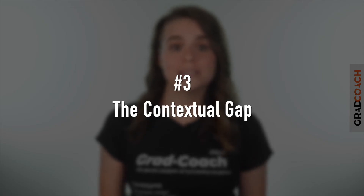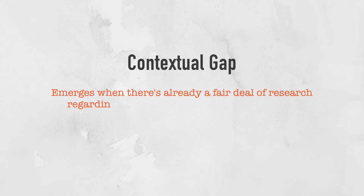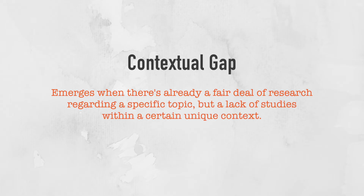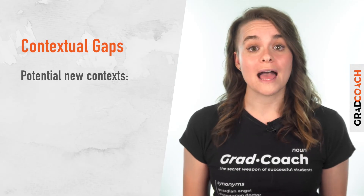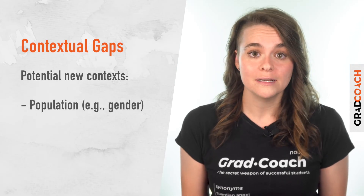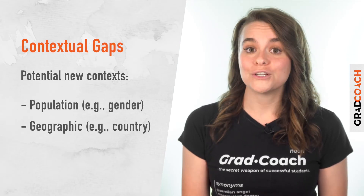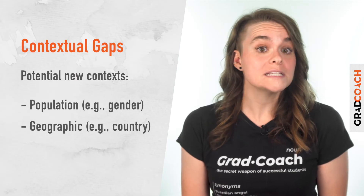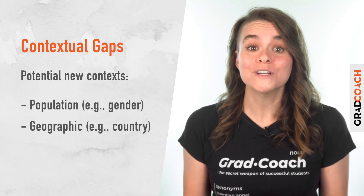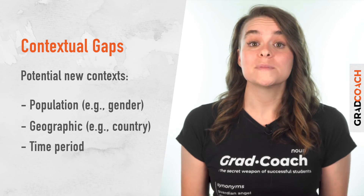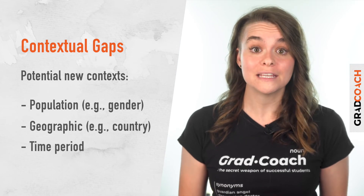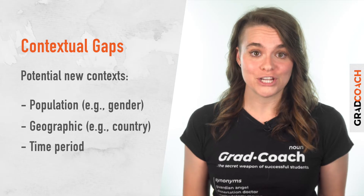The third type of research gap is the contextual gap. Simply put, a contextual gap exists when there's already a decent body of existing research on a particular topic, but an absence of research in specific contexts. For example, there could be a lack of research on a specific population — perhaps a certain age group, gender, or ethnicity — a geographic area such as a city, country, or region, or a certain time period where the bulk of studies took place many years or even decades ago and the landscape has changed.